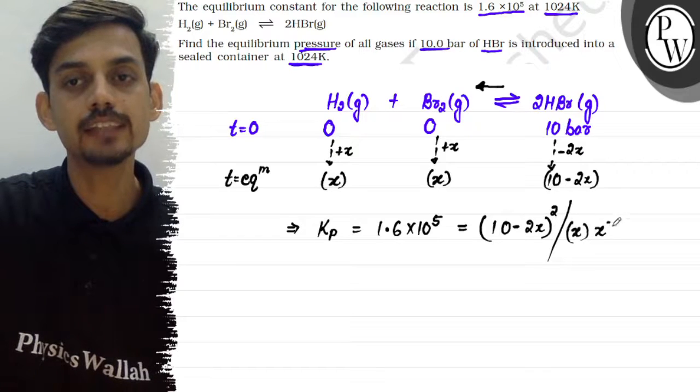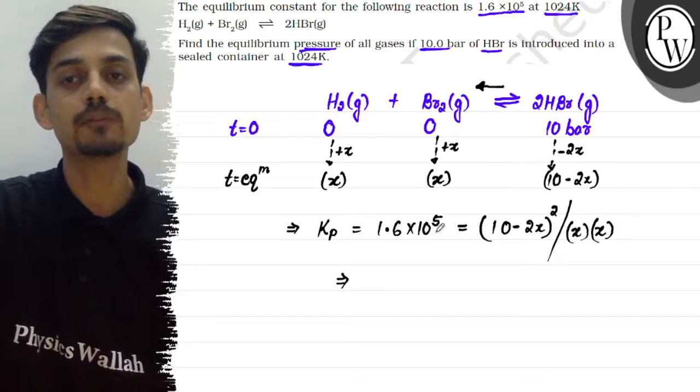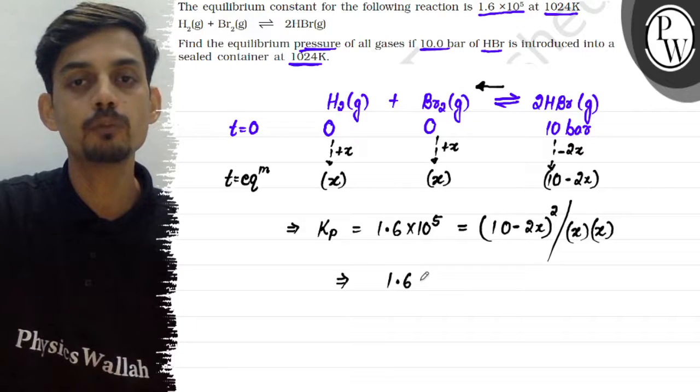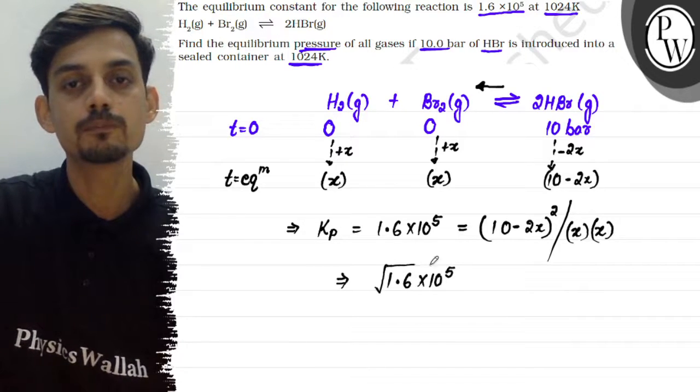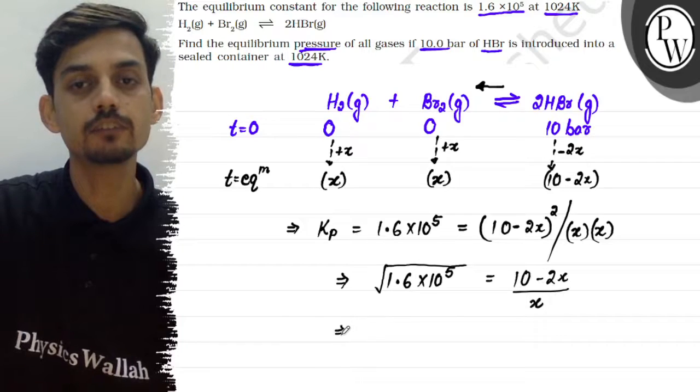the reactant side pressure term: x × x. In this case, the best approach is to take the square root since the right side is a perfect square. So √(1.6 × 10^5) = (10 - 2x)/x.